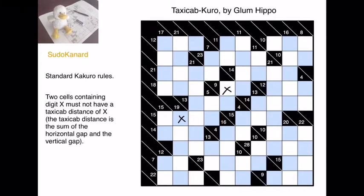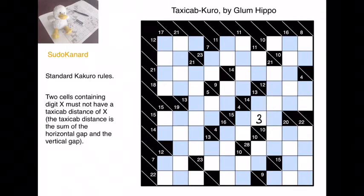If you take the standard chess knight move, it has a taxicab distance of 3. The constraint we add in this puzzle is that if you have a digit here, it must not be repeated at a taxicab distance equal to that digit. For example, this 3 could never be placed at a knight's move away, or anywhere at distance 3.